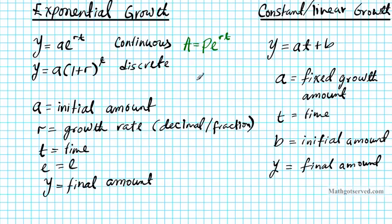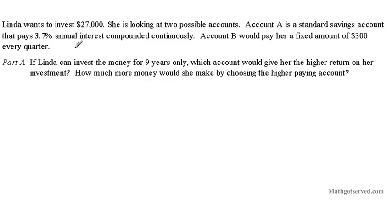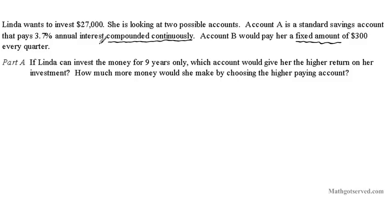So let's go ahead and take a look at an example considering these two models. Lena wants to invest $27,000. She's looking at two possible accounts. Account A is a standard savings account that pays 3.7% annual interest compounded continuously. Account B would pay a fixed amount of $300 every quarter. If Lena can invest for 9 years only, which account would give her the higher return on her investment, and how much more would she make by choosing the higher paying account?